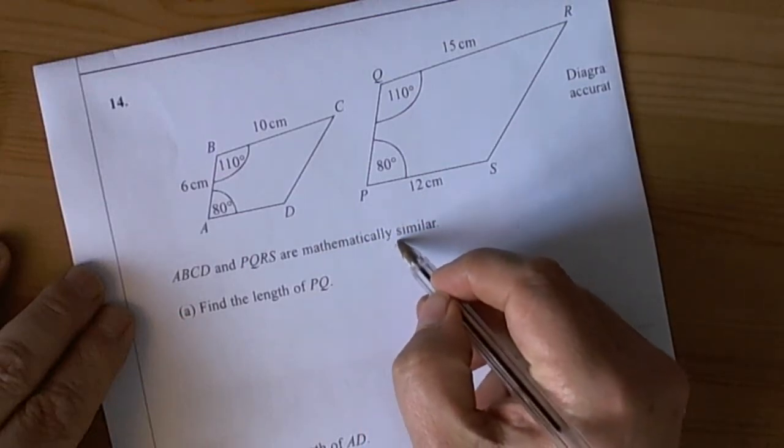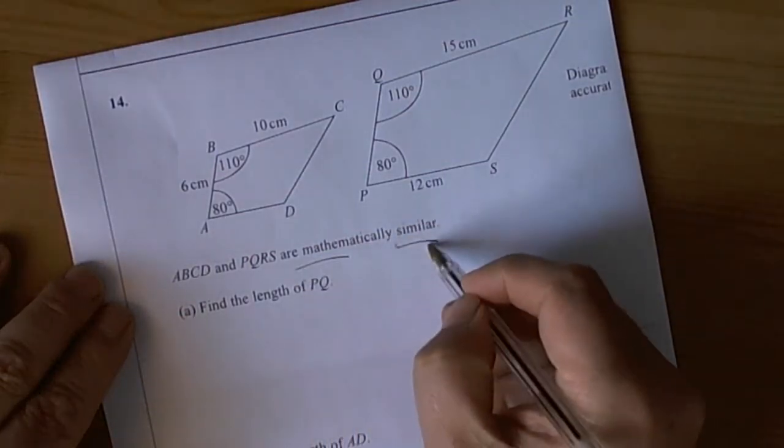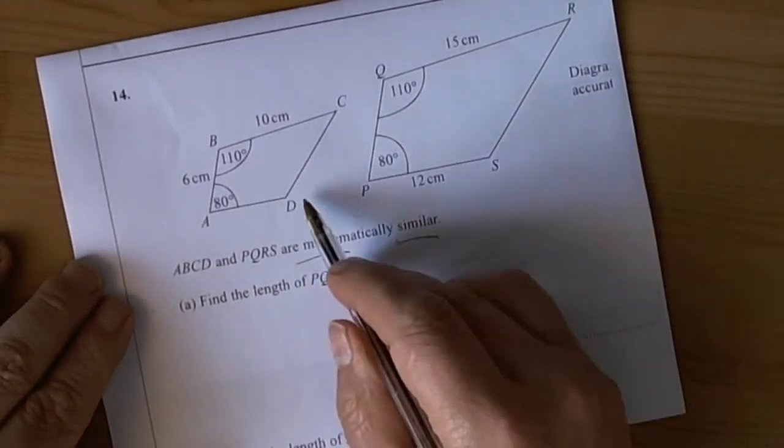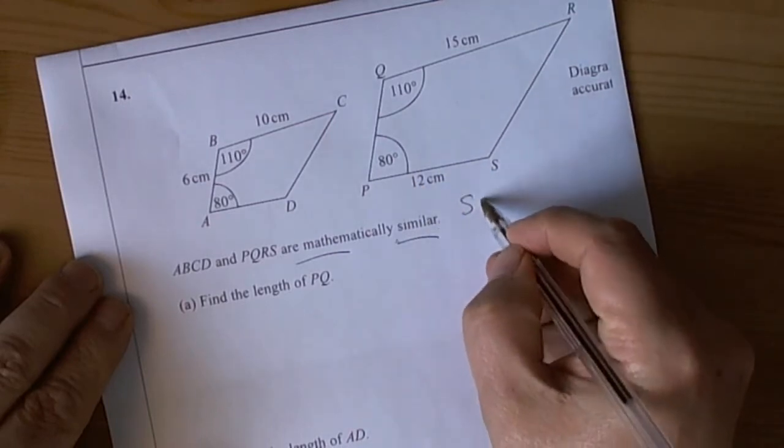This question mentions the word similar and mathematically similar. This involves two shapes - similar means that one's an enlargement of the other, so there must be a scale factor to find.